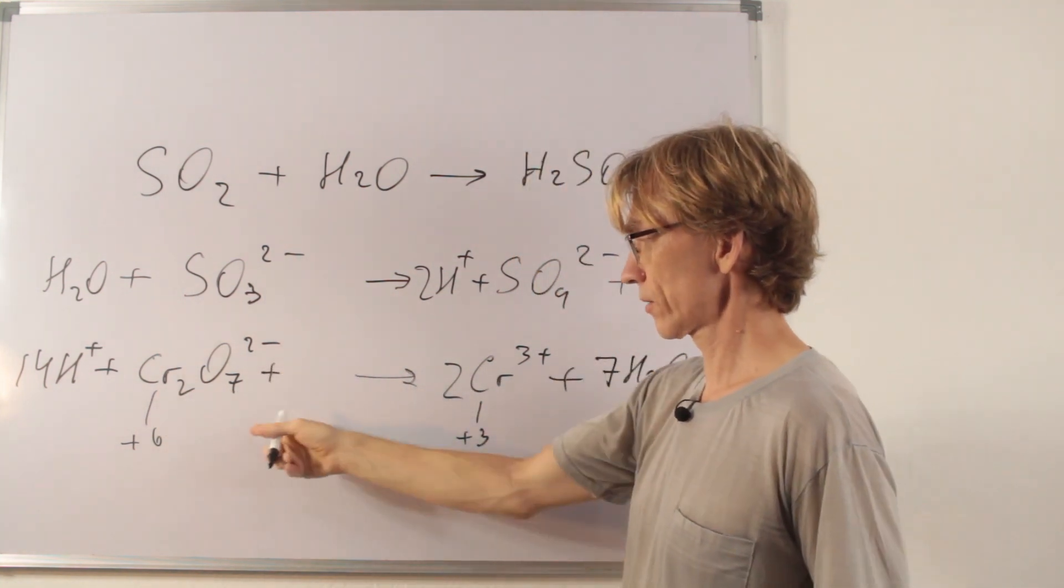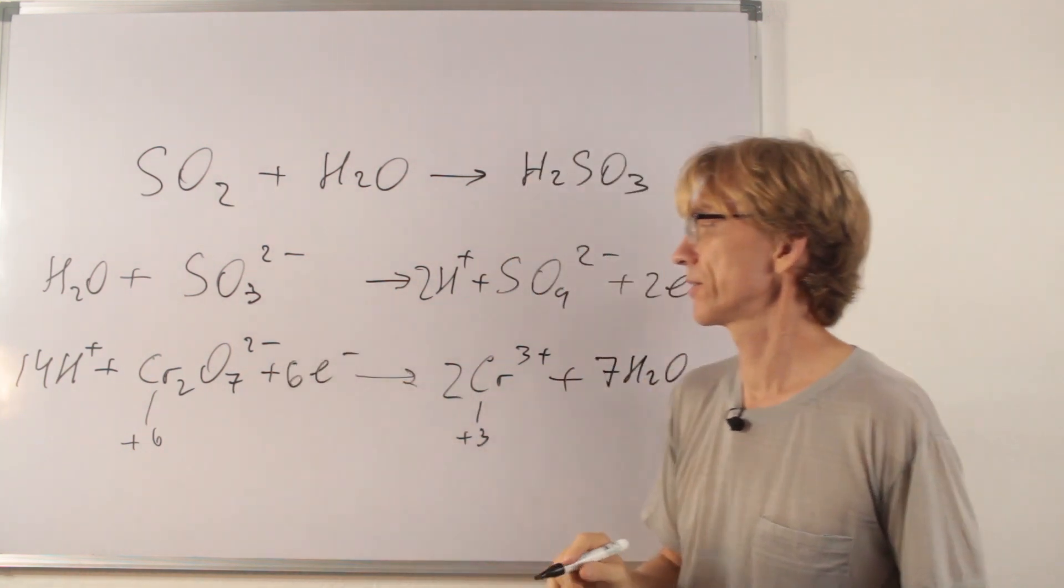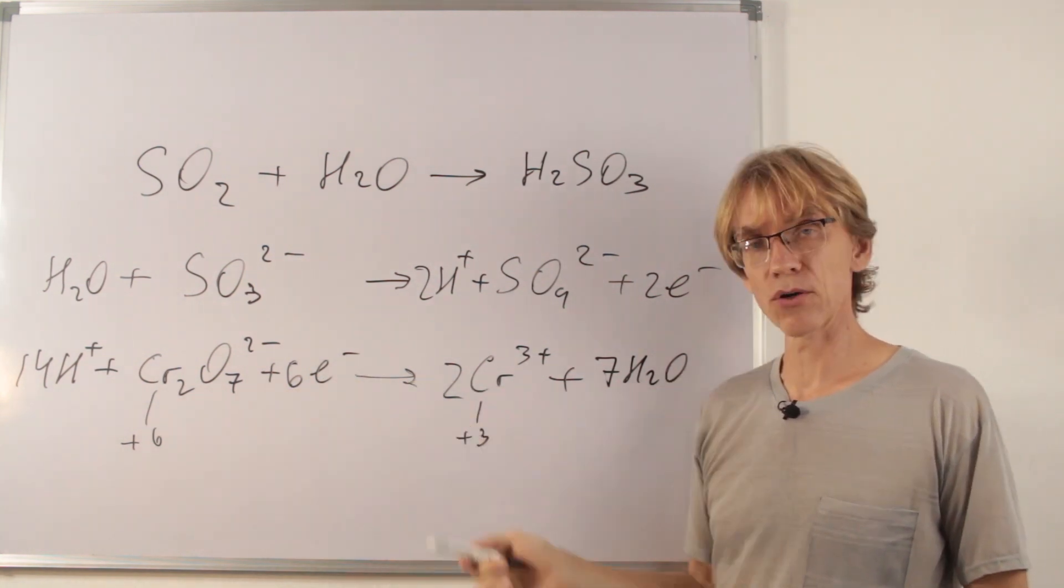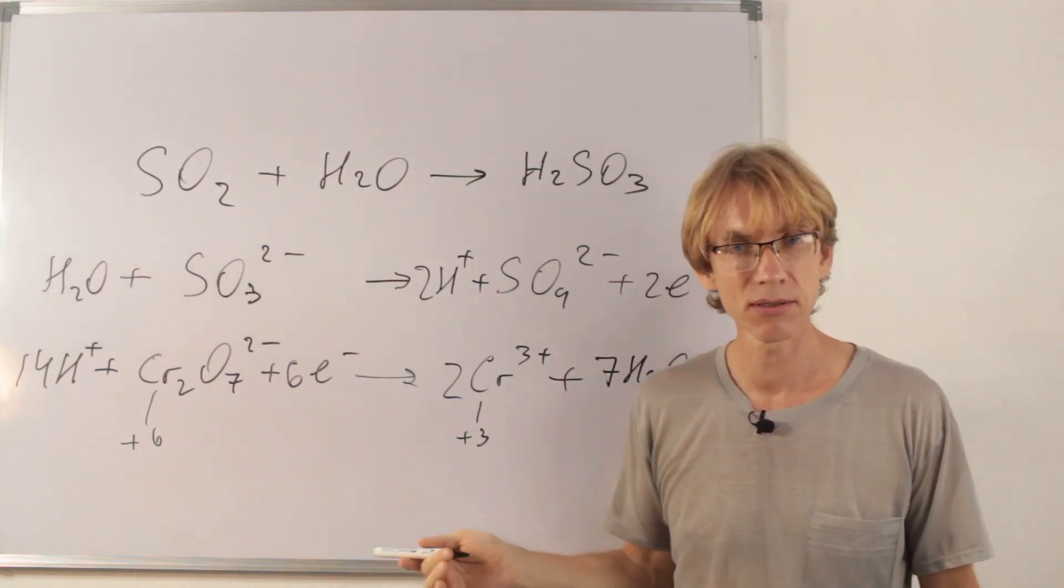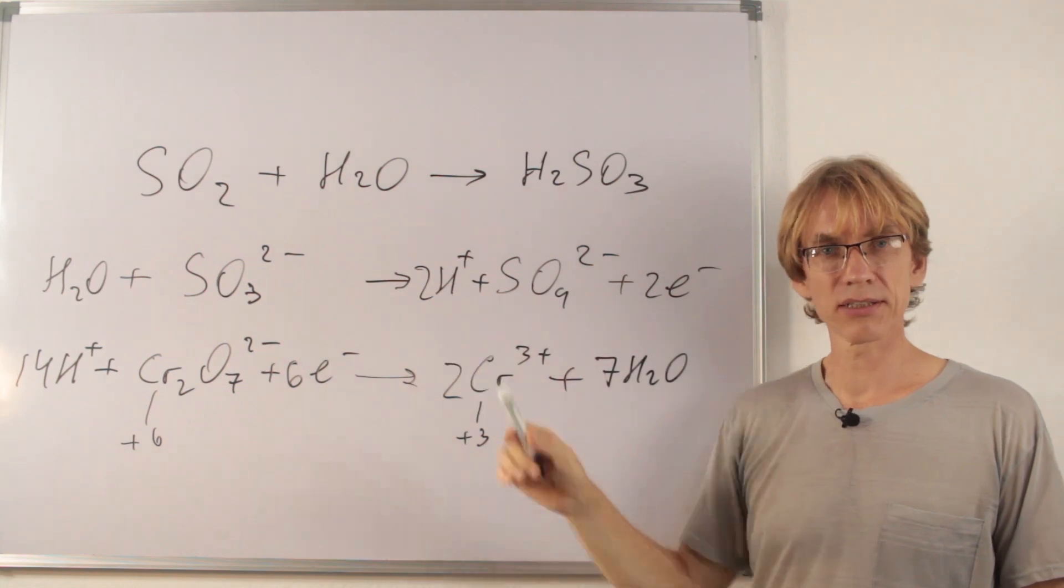So, we have to multiply this 3 by 2. Six electrons is received. That's the half equation for dichromate when it's oxidizing some reducing agent. In this case, it was oxidizing sulfur dioxide or more precisely sulfite ion.